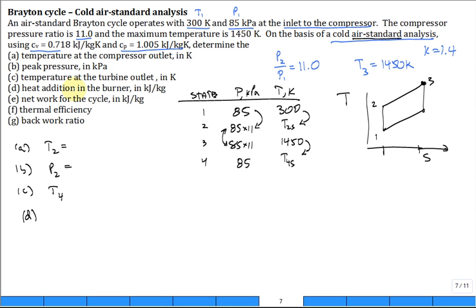How about D, the heat addition in the burner? So, this is where we have our heat addition from state 2 to 3 in the burner. That heat exchanger, sometimes you call it a burner. So, what is that Q in? It's going to be H3 minus H2, and because of constant specific heats, we put C sub P, T3 minus T2. So, that's how you would calculate it.